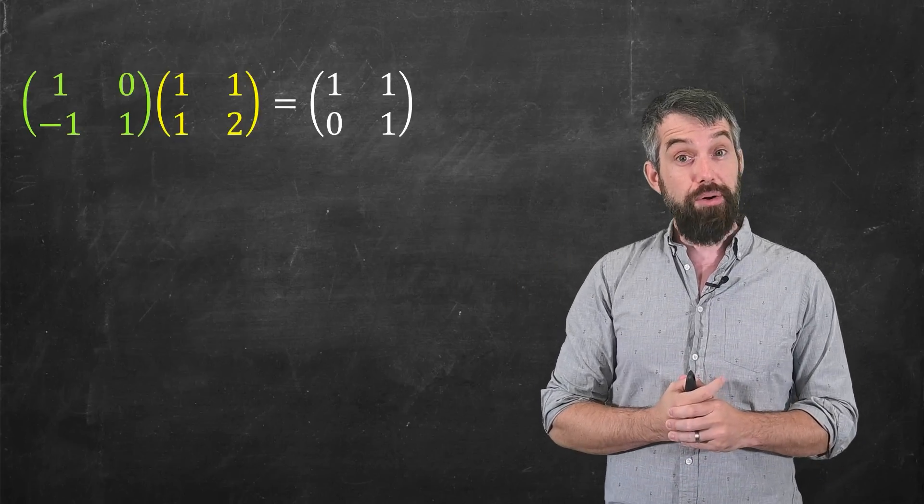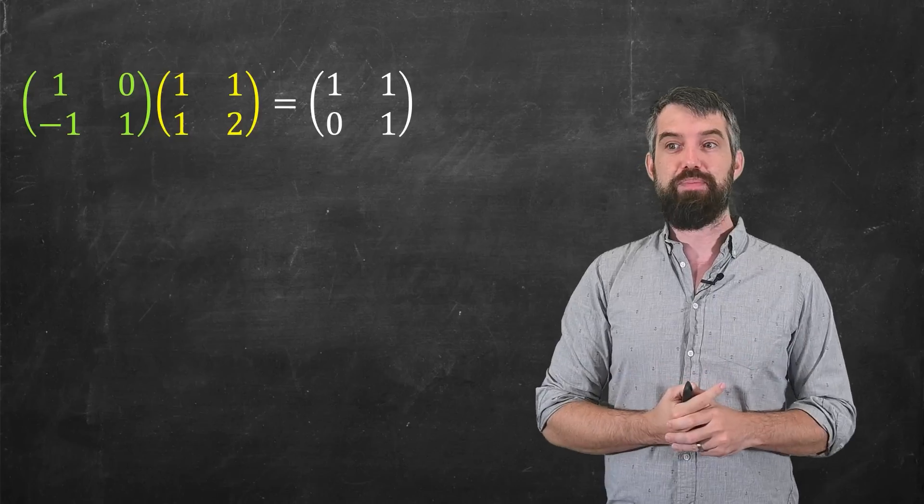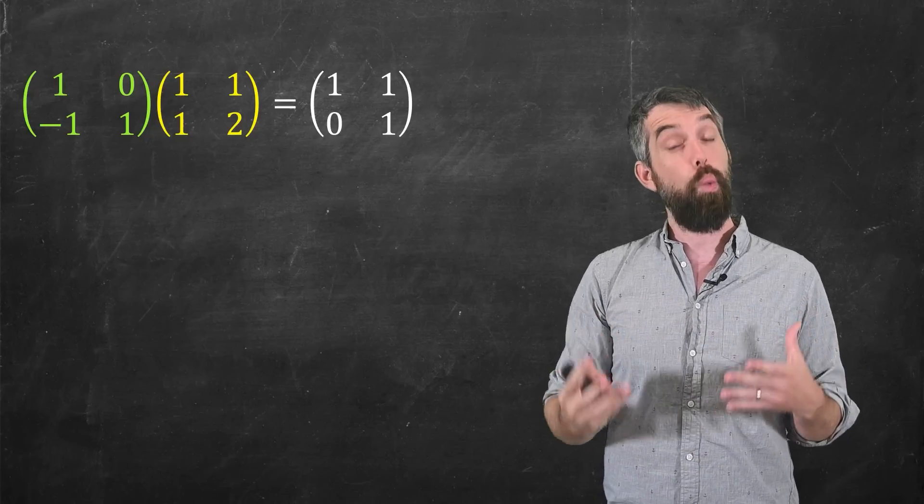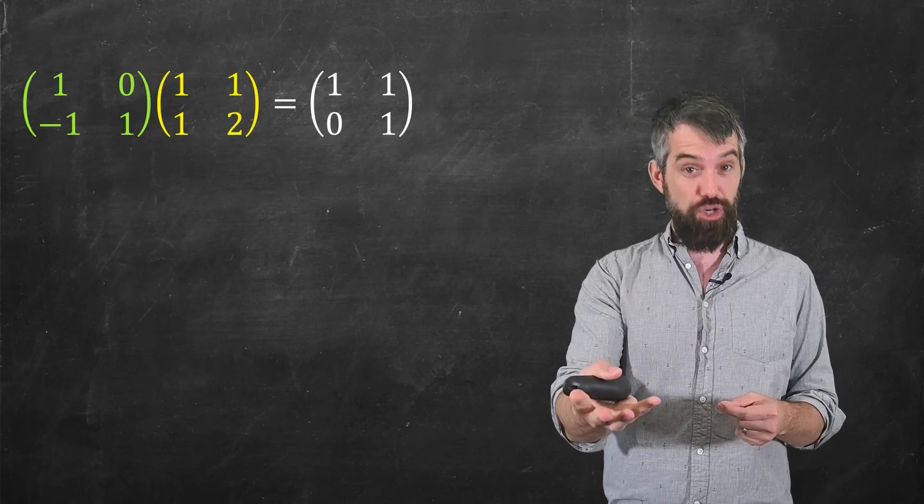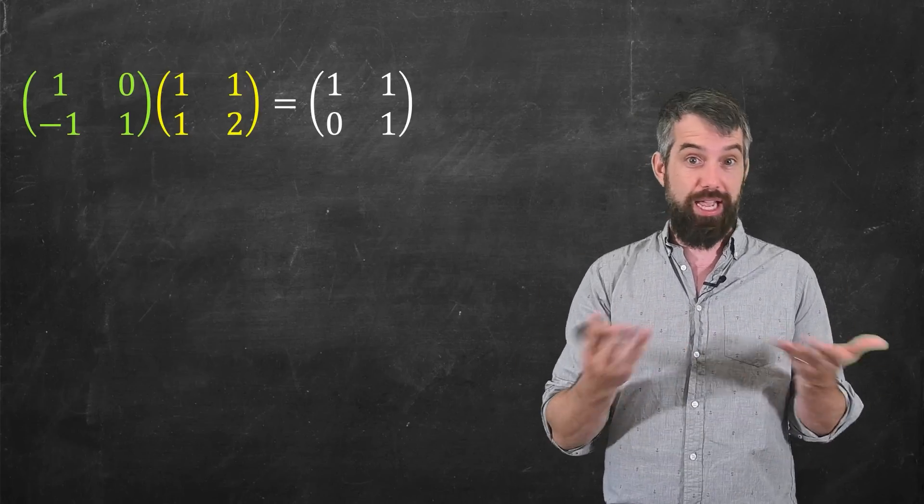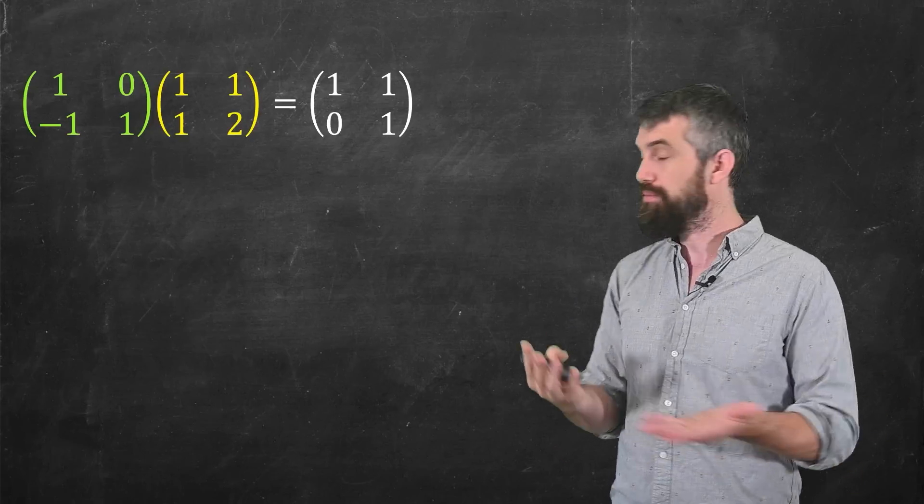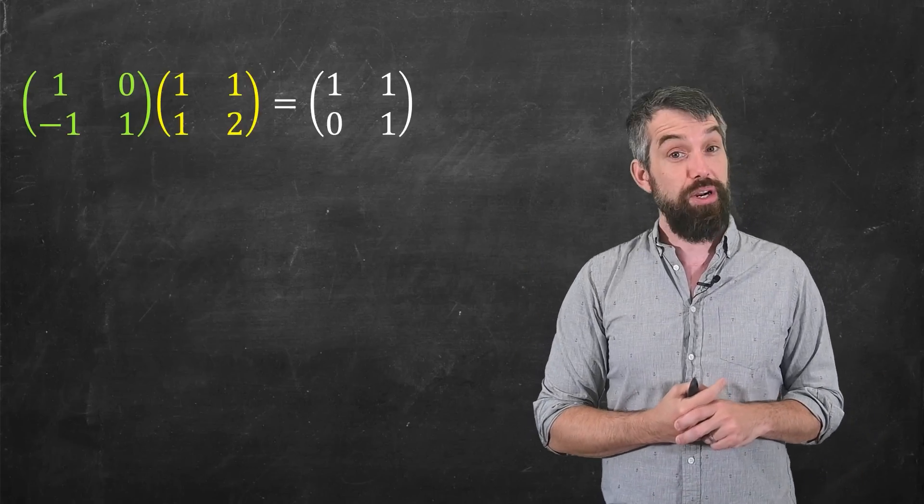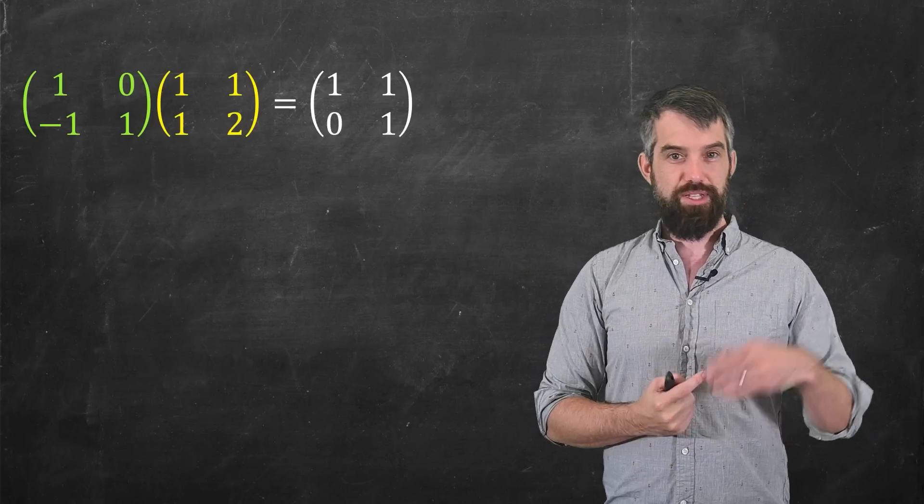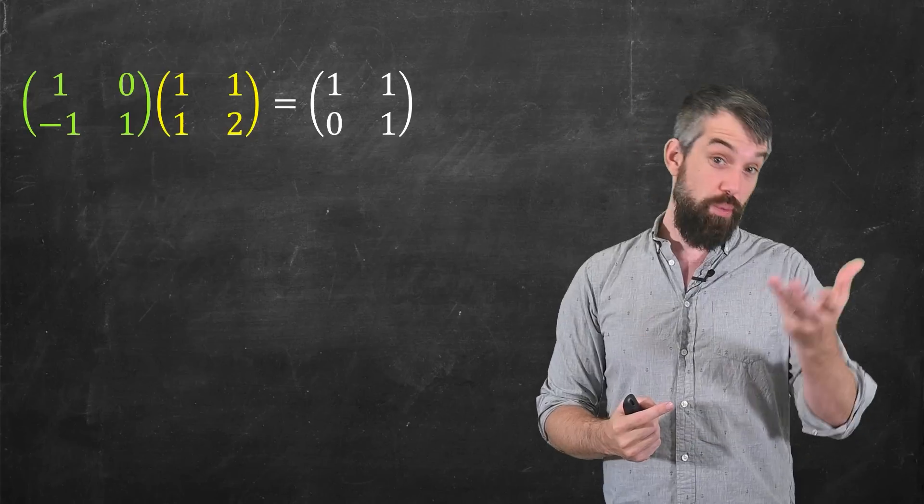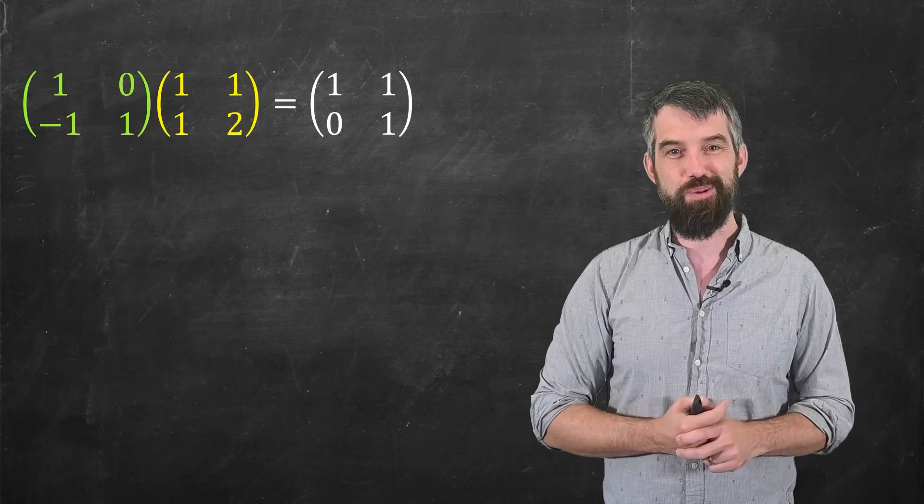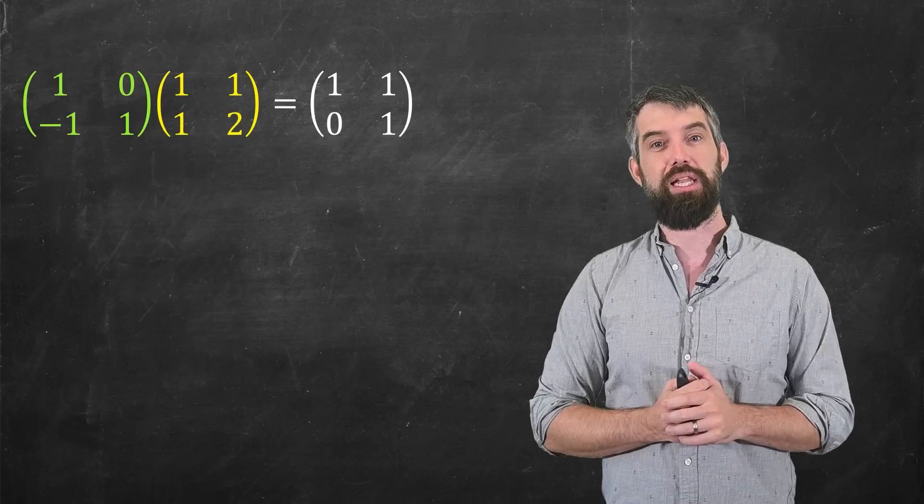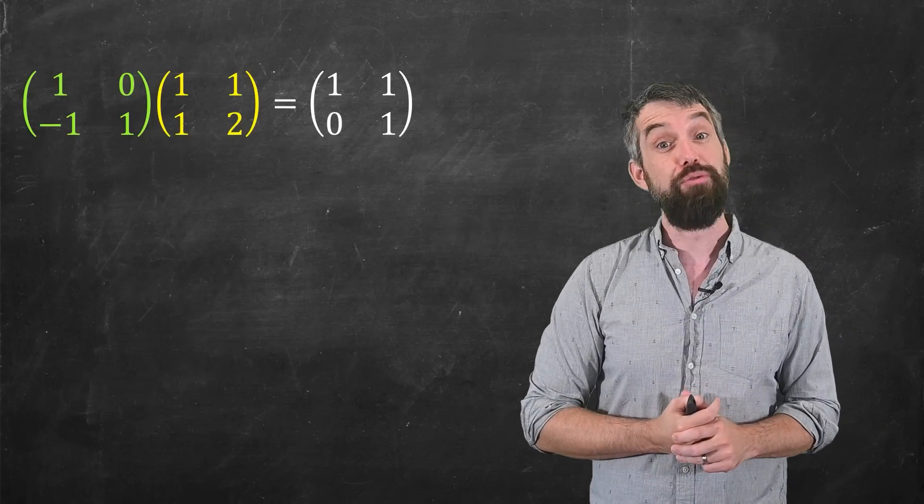It turns out if you multiply on the left by this matrix, that the effect of this is the same as doing the row operation, take the second row and subtract off the first row. And you get the resulting matrix. This new matrix that I'm multiplying by, by the way, is referred to as an elementary matrix, which some linear algebra courses will sometimes very briefly say hello to. So I'm doing this elementary matrix here.